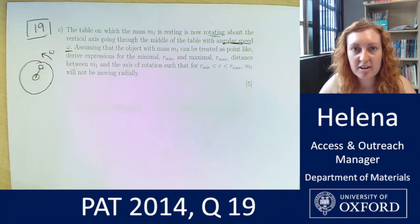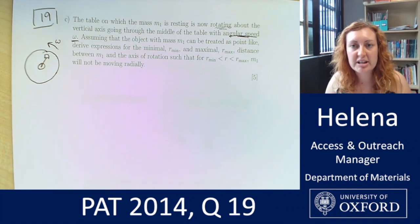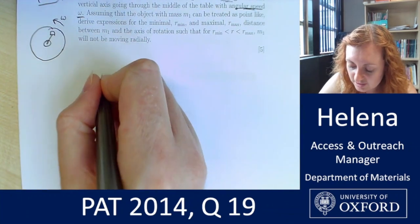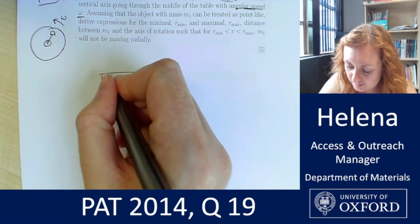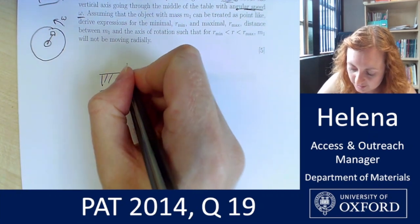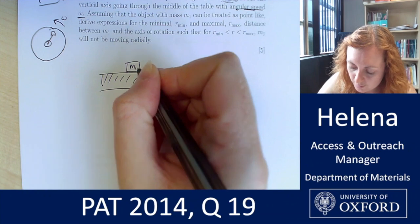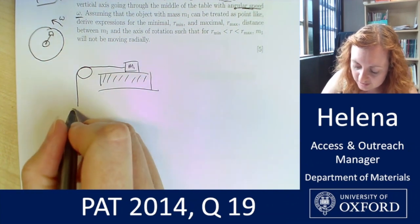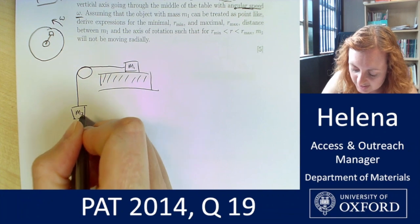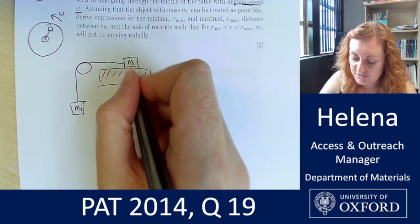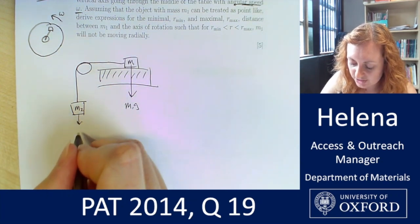So first things first, let's redraw the diagram that we've been using. So we have our table which we're now considering friction, so I'm just going to add some dashes to remind myself. We have our block M1 on the table which is connected over a pulley to our block M2 which is hanging down that hole in the middle. We've still got our weights acting vertically downwards on both of the blocks.